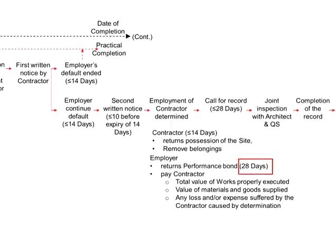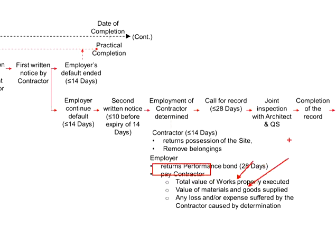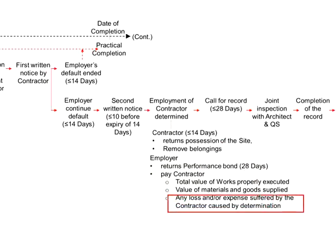Within 28 days, the employer will need to return the performance bond to the contractor and pay the contractor the total value of the work which has been properly executed, the value of the materials and goods which have been supplied, as well as any losses or expenses suffered by the contractor due to the determination. As the default is due to the employer, all losses and expenses suffered by the contractor shall be imposed onto the employer.